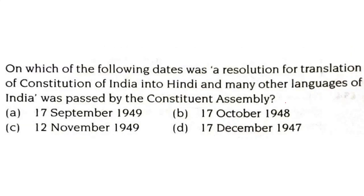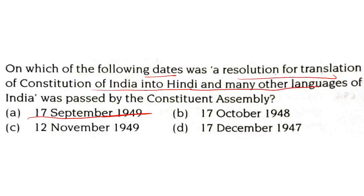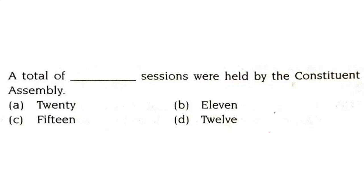On which of the following dates was a resolution for translation of the Constitution of India into Hindi and many other languages passed by the Constituent Assembly? It was on 17th September 1949. A total of 11 sessions were held by the Constituent Assembly.